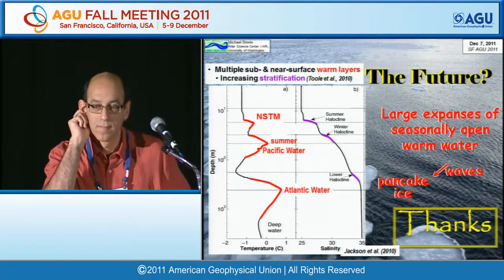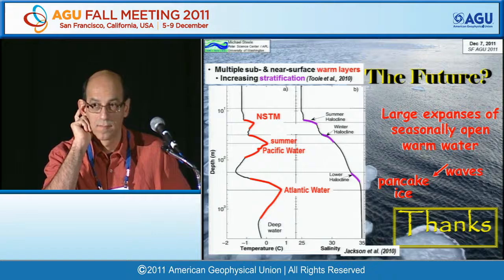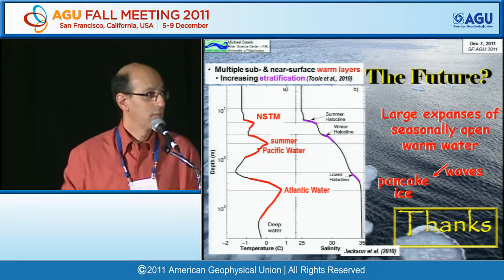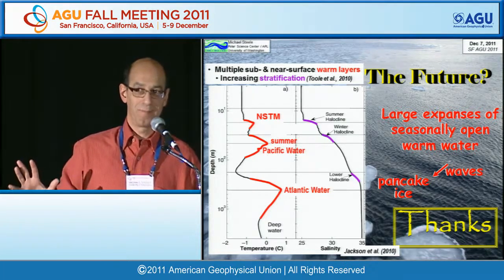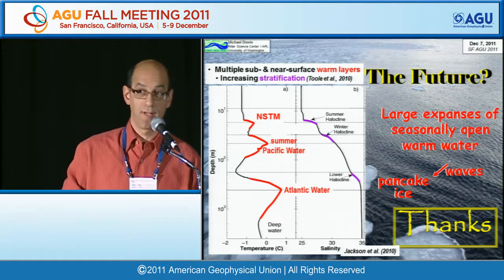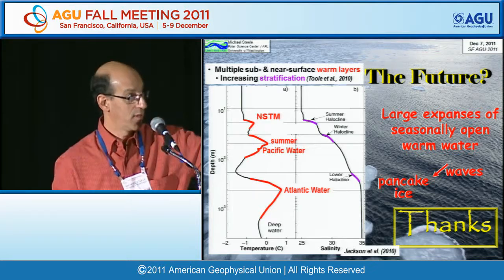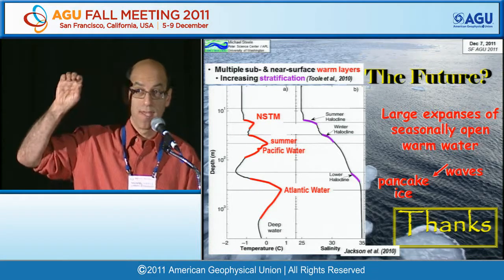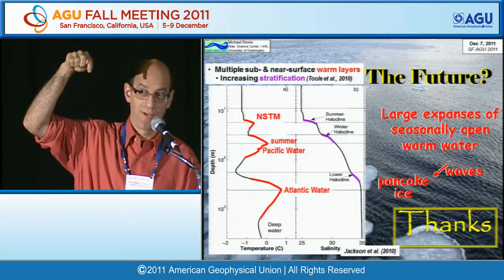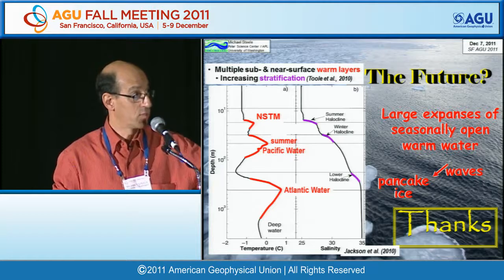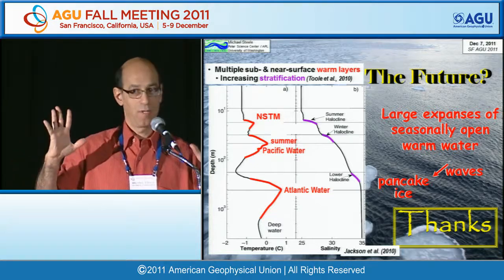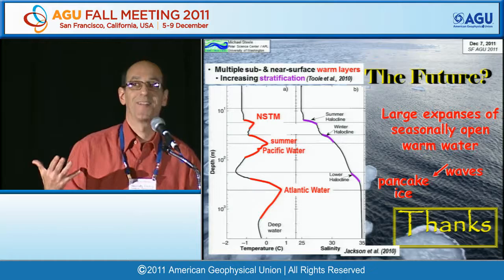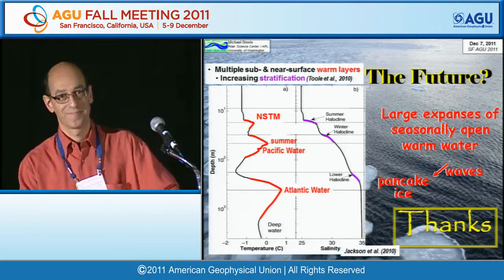Regarding model resolution: our model barely had good enough vertical resolution to resolve one NSTM layer, which we were very happy about. It did not resolve the next layer down — the summer Pacific water — as most ocean models have better resolution toward the surface and then decreasing resolution as you go deeper. So we just barely got the NSTM and there's no way we could have gotten multiple ones, but in the next iteration of the model with better resolution, we could do that.